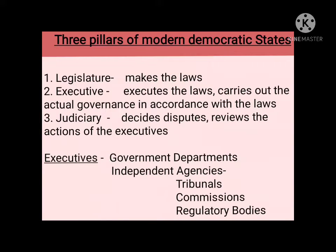To understand the meaning of administrative law, we start from the three pillars of the modern democratic state. The first pillar is the legislature, the second is the executive, and the third is the judiciary. The legislature makes laws, the executive executes the laws and carries out actual governance, and the judiciary decides disputes and reviews the actions of the executive to determine whether they are undertaken as per the law.